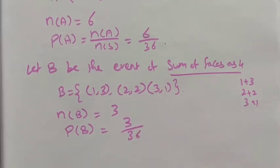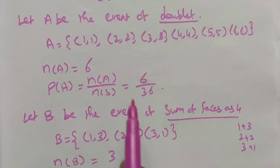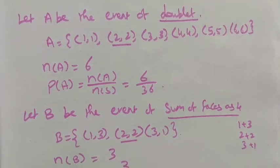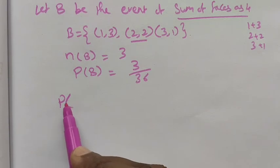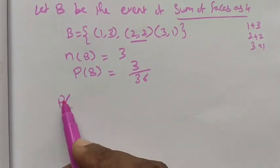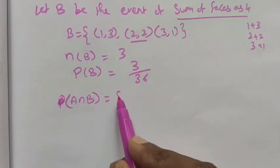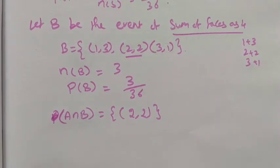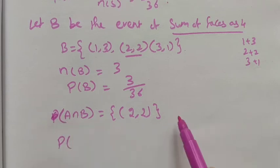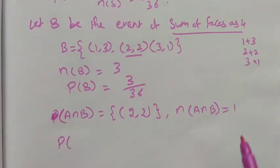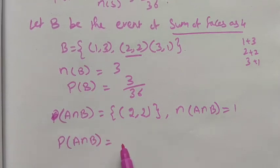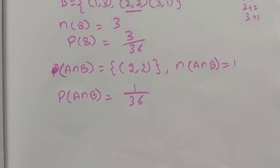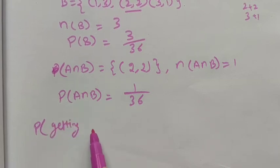Now we find the intersection. Is there any common favorable outcome between A and B? Yes — (2,2) appears in both. So A ∩ B = {(2,2)}, and n(A ∩ B) = 1. Therefore, P(A ∩ B) = n(A ∩ B) / n(S) = 1/36.